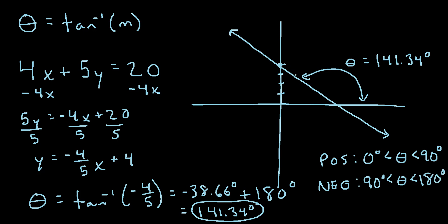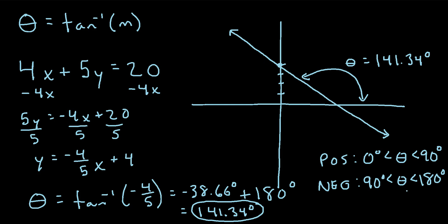For example, in this particular line, we saw the slope was negative 4/5 — a negative slope — so we did find the angle of inclination was between 90 and 180 degrees. That's just a rule of thumb you can use to double-check your work.